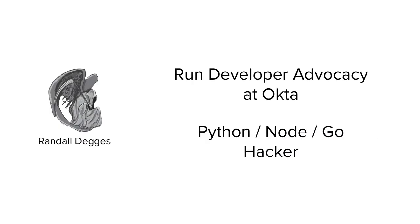My name is Randall. I run developer advocacy at a company called Okta. We're a security API company. We store user accounts for your applications — web apps, mobile apps, API services. We do all the authentication, authorization, and security stuff. We give you developer libraries in many languages to let you log users in, register them, reset their passwords, authenticate them. I've also been doing Python, Node, and Go mainly in the security space for many years.